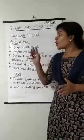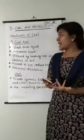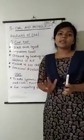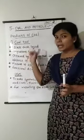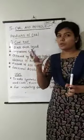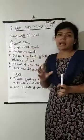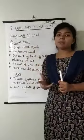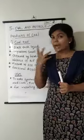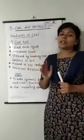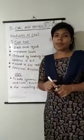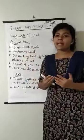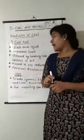The second product is coal-tar. Coal-tar is a black colored, thick liquid. You can see in the figure in your textbooks — it is a liquid which is not loose or soft but thick and black in color. It has an unpleasant smell, that is, a bad smell. Coal-tar is also obtained by heating coal in the absence of air, just like coal gas.